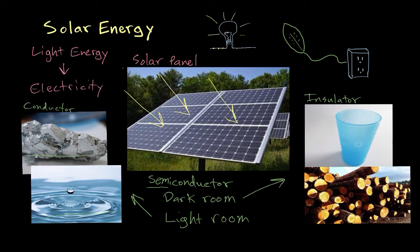This difference between how a semiconductor acts in a dark room and how it acts in a light room or outside in the sunshine is the main thing that allows solar panels to turn light energy into electricity. These solar panels sometimes sit right on top of buildings and provide electricity for those buildings. Other times, a whole bunch of them are grouped together in a really sunny area, and then the electricity is sent out to buildings through wires or power lines.